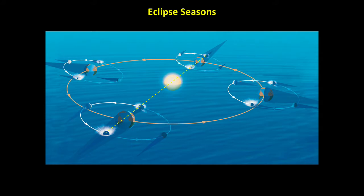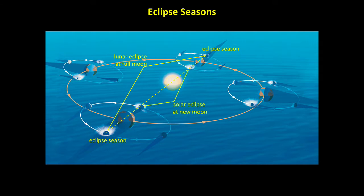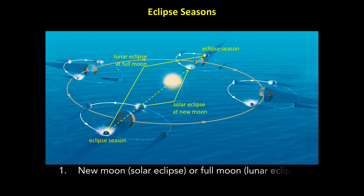Notice that there are only two time periods each year during which the nodes line up close enough with Earth and the sun to make eclipses possible. These periods, called eclipse seasons, each last a little less than five weeks, which is enough time for both a lunar eclipse at full moon and a solar eclipse at new moon. In other words, we have eclipses when two conditions are met: first, it must be either new or full moon; and second, the new or full moon must occur when the moon is very close to a node, which means it must occur during an eclipse season.